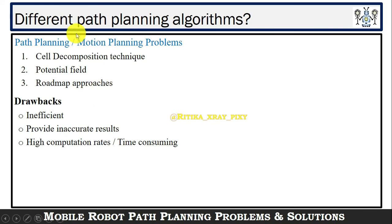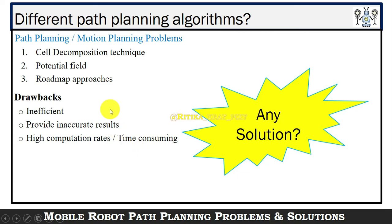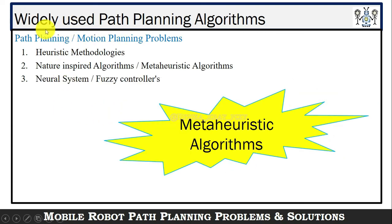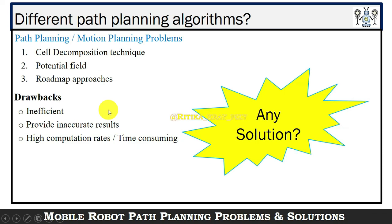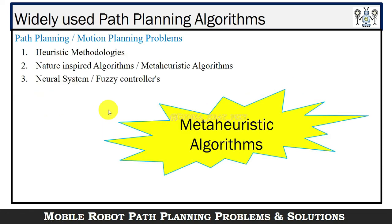There are a number of different path planning algorithms, including cell decomposition techniques, potential field, and roadmap approaches. However, these algorithms have drawbacks: they are inefficient, provide inaccurate results, and are time consuming. The solution is to use widely used path planning algorithms such as heuristic methodologies, nature-inspired algorithms — also called meta-heuristic algorithms — and neural systems or fuzzy controllers. These algorithms are most popular and widely accepted by researchers in mobile robot path planning.